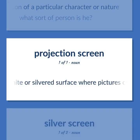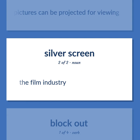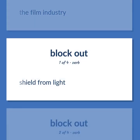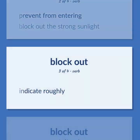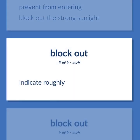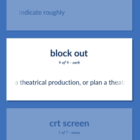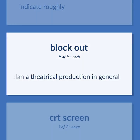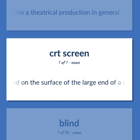A wide or silvered surface where pictures can be projected for viewing. The film industry. Shield from light. Prevent from entering. Block out the strong sunlight. Indicate roughly. Plan where and when songs should be inserted into a theatrical production, or plan a theatrical production in general. The display that is electronically created on the surface of the large end of a cathode ray tube.